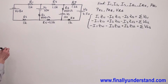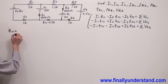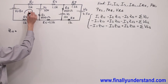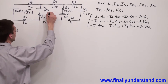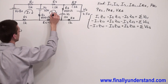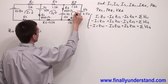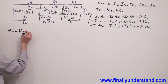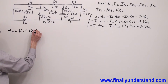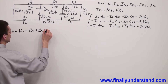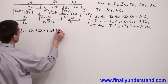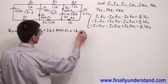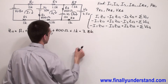First we have to find Z11. Z11 is the sum of the impedances in loop 1. This is my loop 1 with loop current I1, loop 2 with loop current I2, and loop 3 with loop current I3. Z11 is R1 plus R2 plus R3, which equals 2 kilo plus 800 ohms plus 1 kilo, equal to 3.8 kilo ohms. This is my Z11.